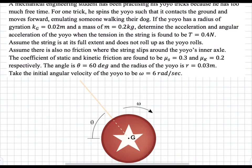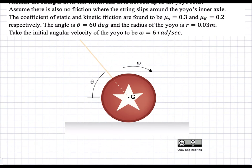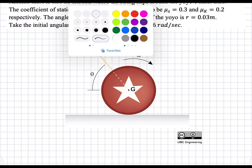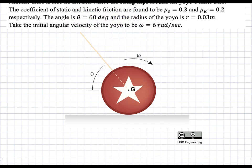There are two cases for this question which we don't know which one is occurring — either slipping or no slipping at the bottom, where the yoyo contacts the ground. We're given the angle theta and we have the following forces.